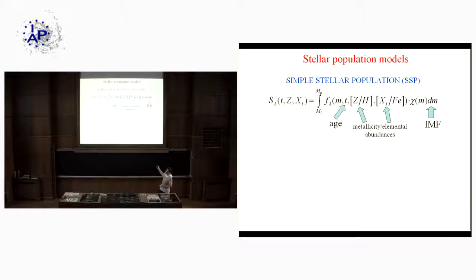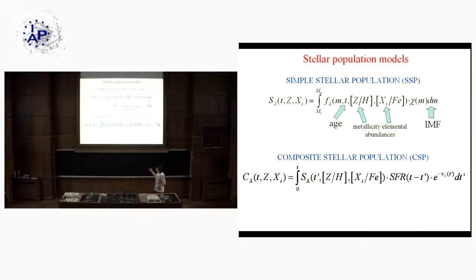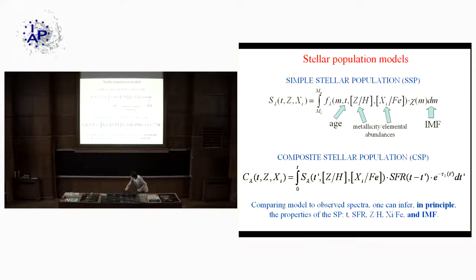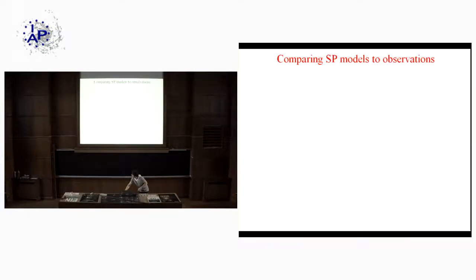Essentially, the IMF is the number of stars per unit mass. You take the spectrum of a star with mass m given age and chemical composition, and through integration you get your simple stellar population model prediction — your model spectrum. You can also convolve this with the star formation history of the galaxy to get the composite stellar population model. As you can see, these model spectra depend on chemical composition, age, and a number of parameters including the IMF. In principle, comparing model spectra to observations, you can infer the parameters including the IMF.